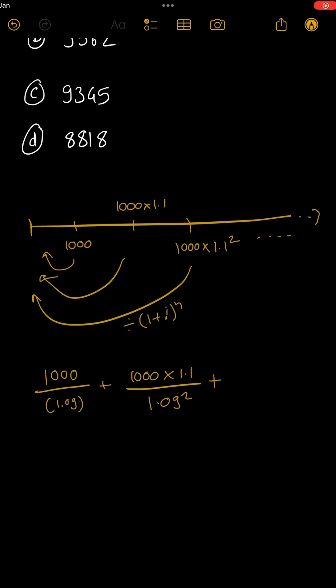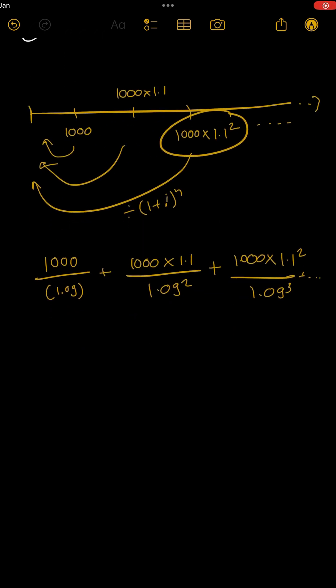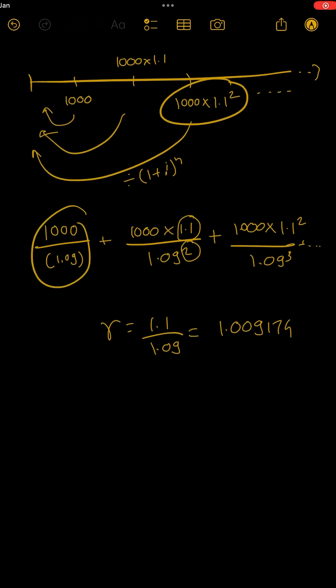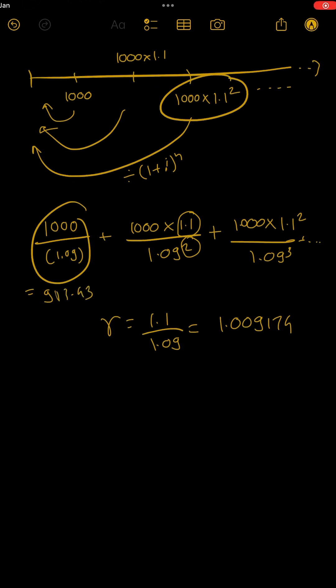And so on up to 10 terms. So if you see, this is a geometric progression where common ratio is 1.1 and we are dividing by 1.09, so the common ratio is 1.1/1.09. On your calculator check if it is around 1.009174, and the first term, check if it is something like 917.43.